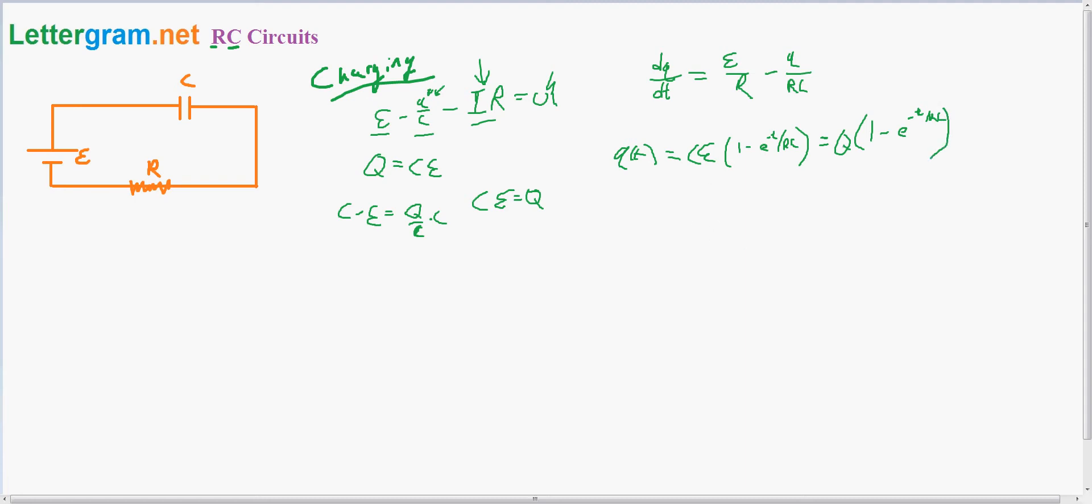Which is also equal to the maximum charge times 1 minus e to the negative t divided by RC. If you plug these in, just memorize them. R is the resistance, C is the capacitance of the capacitor, and these are both total capacitance and total resistance.